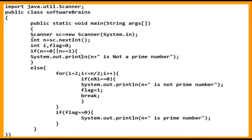Instead of hard-coding a number, here I am using a Scanner to read input from the user. I have declared variables i and flag, with flag initialized to 0. An important note: when you are performing addition you can start with 0, but when performing multiplication you should initialize to 1, otherwise 0 × anything will always be 0. So the product accumulator should be initialized to 1.